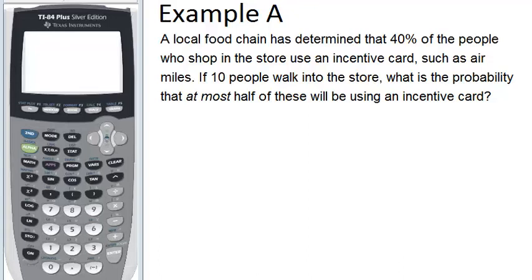In example A, a local food chain has determined that 40% of the people who shop in the store use an incentive card such as air miles. If 10 people walk into the store, what is the probability that at most half of these will be using an incentive card?